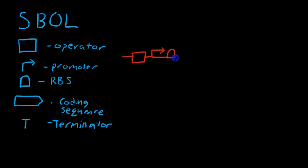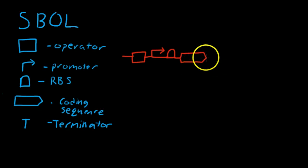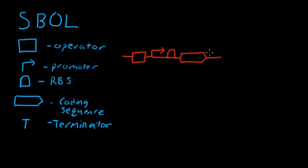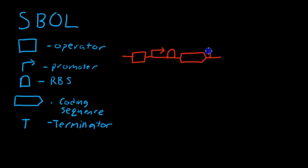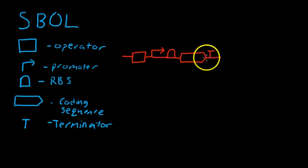After the ribosome binding site, you have the coding sequence, which is denoted by this hollowed arrow. The coding sequence is the actual protein product that you're interested in. You can think of the ribosome binding site as like a promoter for messenger RNA. After the coding sequence, you need something to tell your RNA polymerase to get off of the DNA, and this is the terminator. So as a standard way put together, we have the operator, the promoter, the ribosome binding site, the coding sequence, and the terminator.